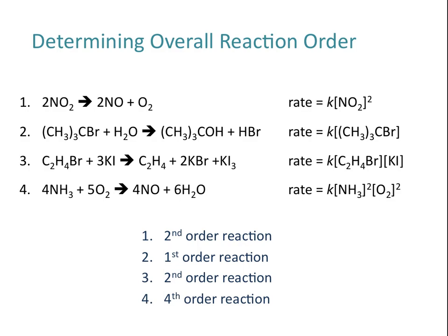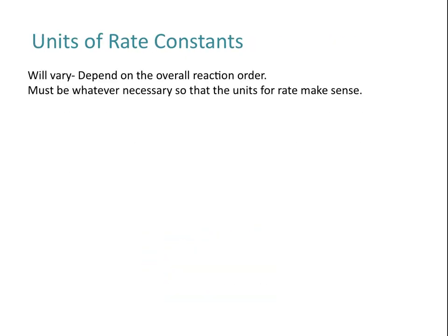Our fourth example is a fourth order reaction: second order with respect to NH₃ and second order with respect to O₂, so fourth order overall. The very last thing I'm going to cover in this tutorial is how to determine what the unit of your rate constant is going to be. You need to know that the unit of the rate constant is going to vary depending on the rate law and the overall reaction order.